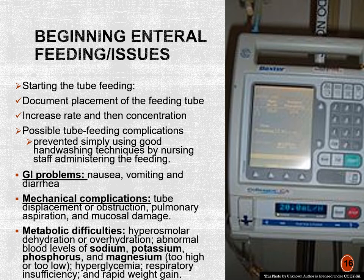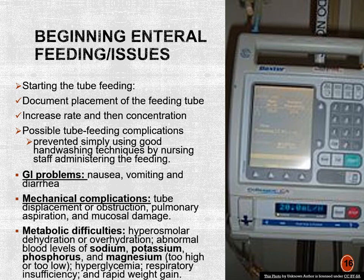If GI issues occur, we decrease the rate and potentially switch to an elemental or high-fiber formula. Mechanical complications include displacement of the tube into the lungs, causing aspiration, or damage to the mucosal lining of the stomach. We always measure blood levels of electrolytes — sodium, potassium, phosphorus, and magnesium. We also measure weight. If there is rapid weight gain of 8 to 10 pounds per week, that means the patient is receiving too much fluid, is overhydrated, and we need to decrease the rate, as they are not absorbing the formula.